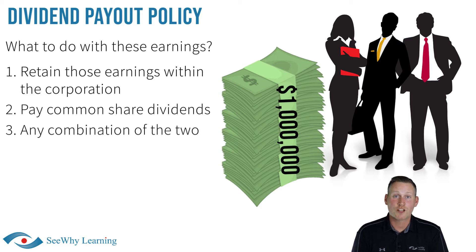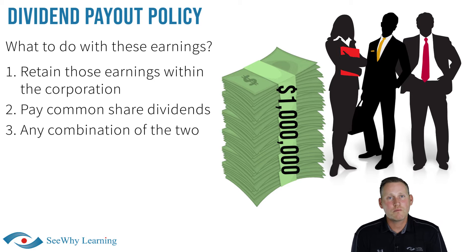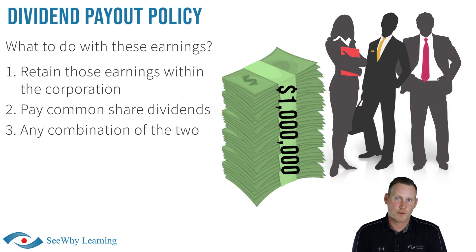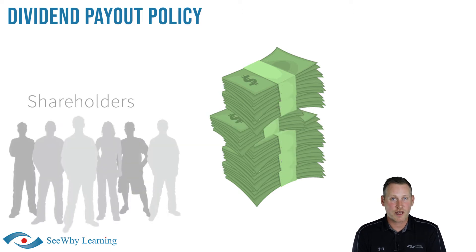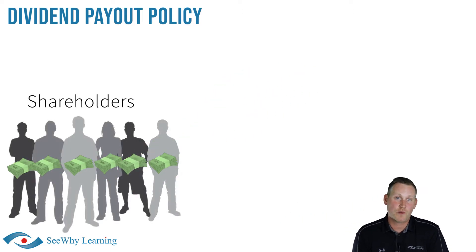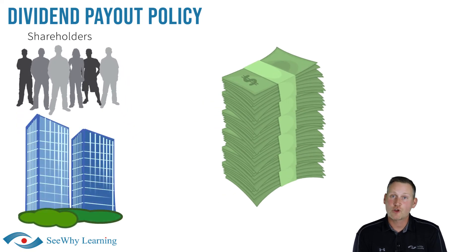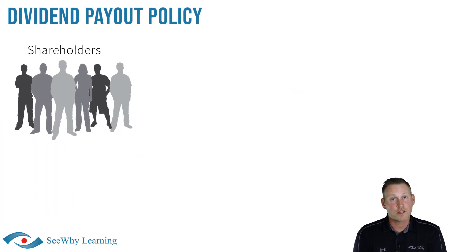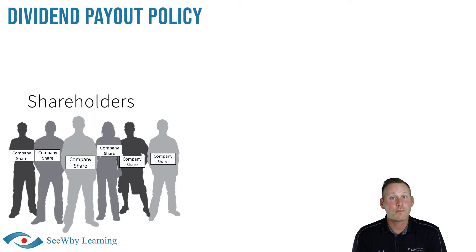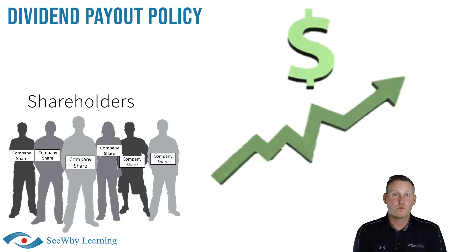It could, of course, choose some combination of both. It's important to keep in mind that either option ultimately benefits the common shareholder. If the company decides to pay a dividend, the common shareholders would surely be happy to receive the cash. On the other hand, if the corporation retains the earnings within the business, presumably to fund future growth, the company's share price will likely increase.